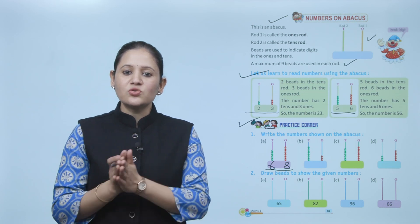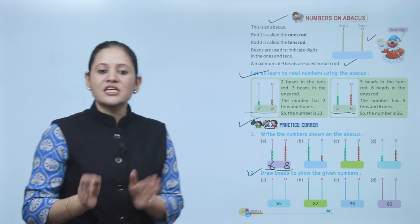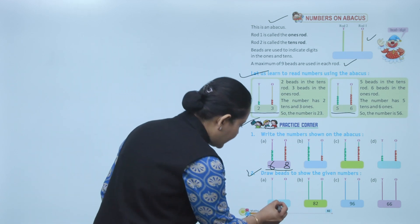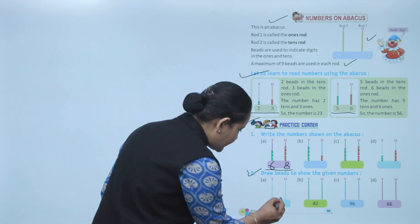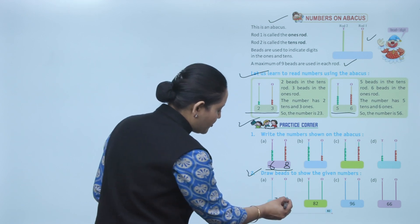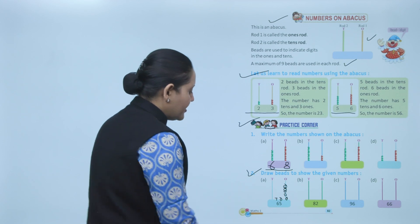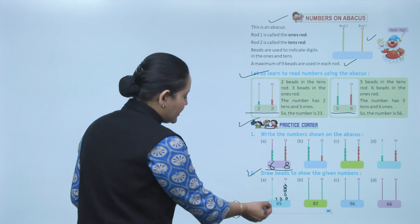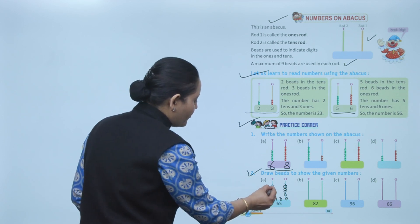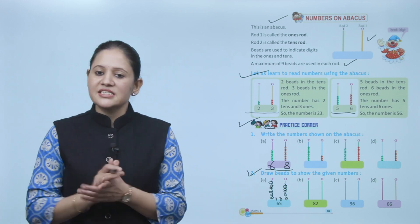Next, draw beads to show the given number. First is number 65. Start from the right — ones place on the right, tens place on the left. Ones place has 5 beads: 1, 2, 3, 4, 5. Tens place has 6 beads: 1, 2, 3, 4, 5, 6. That will represent number 65.